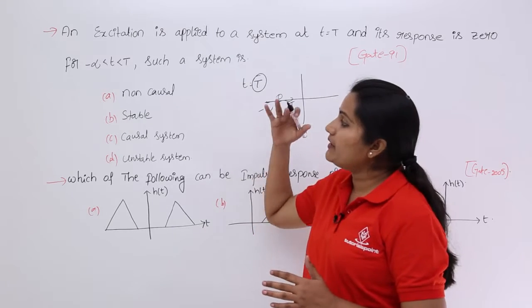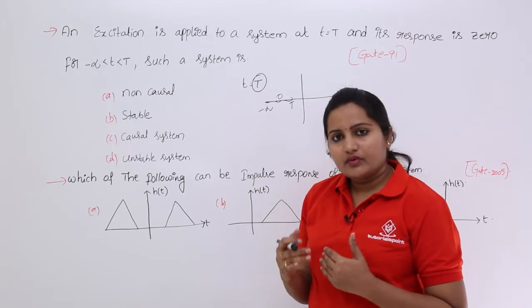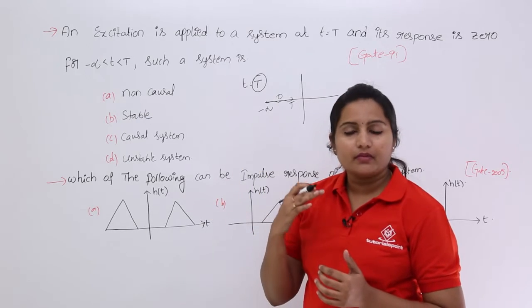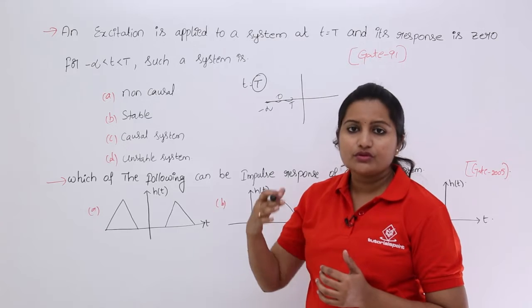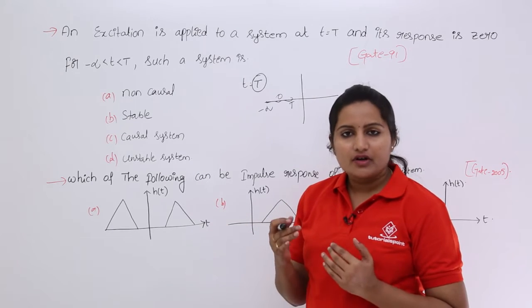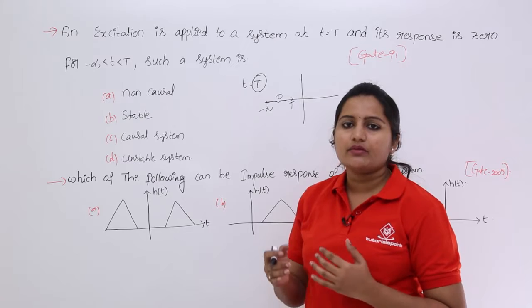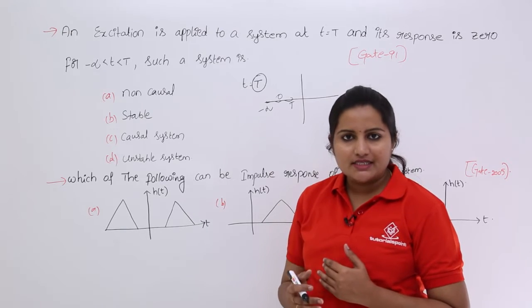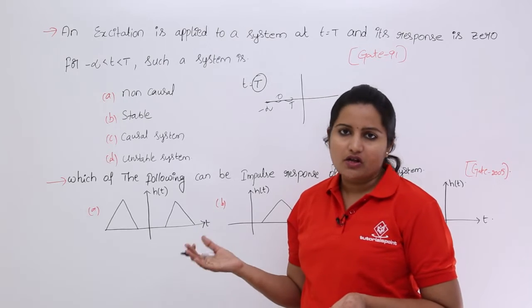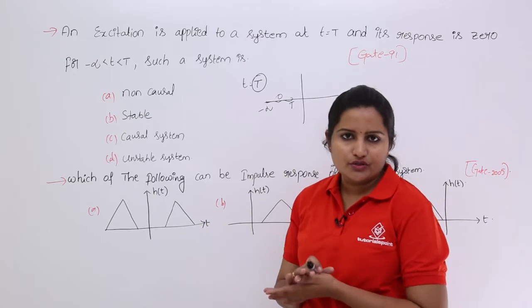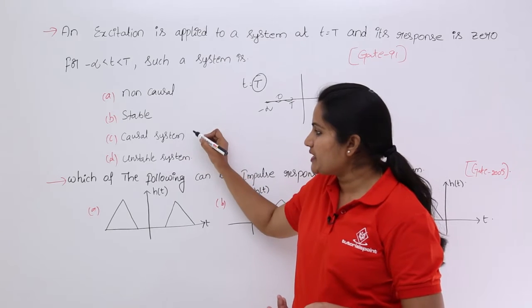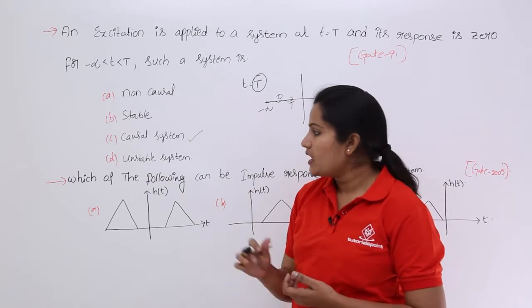For example, if the response were dependent upon values from t to some other values, we cannot say that is causal. Because a causal system's response depends upon present or past. Here even past values are not included — this depends only upon the present input. So the system is said to be a causal system.